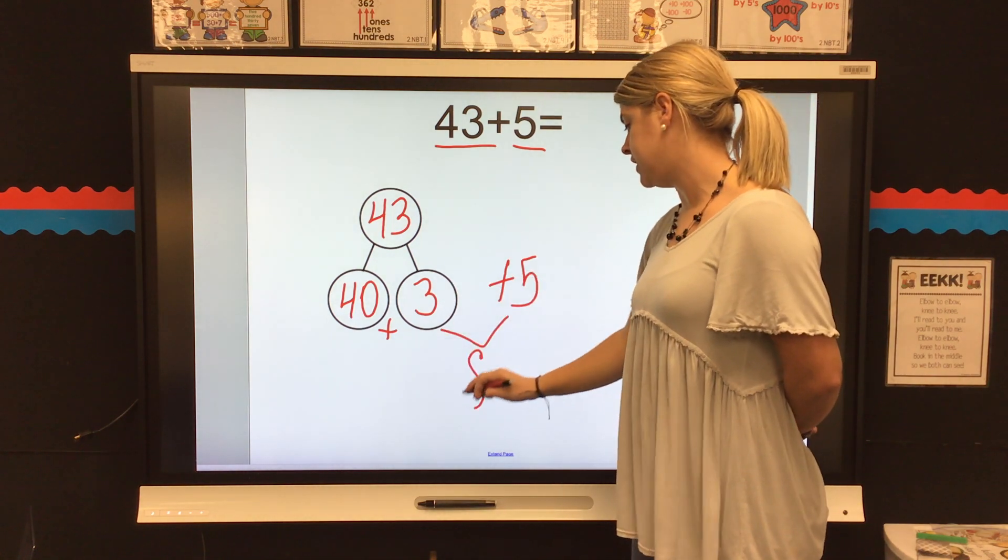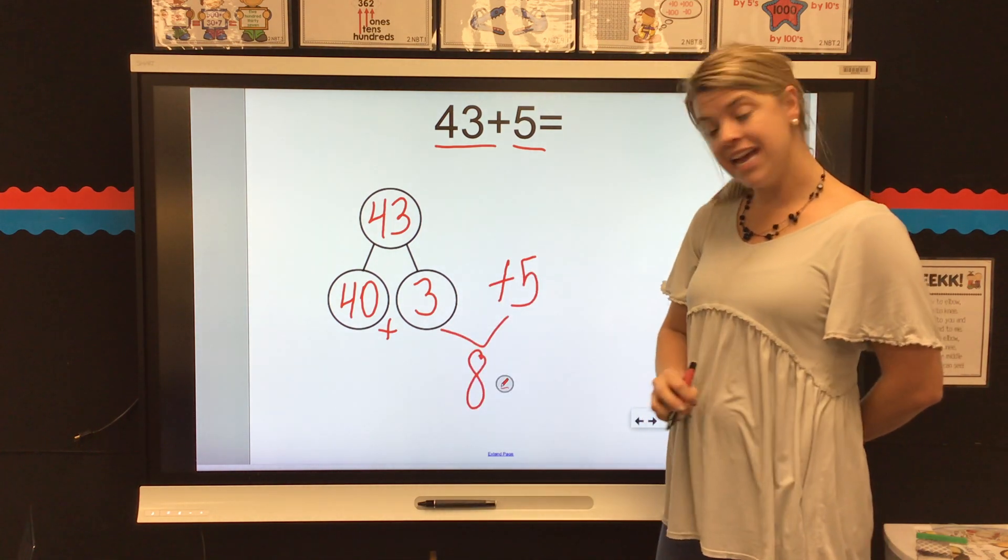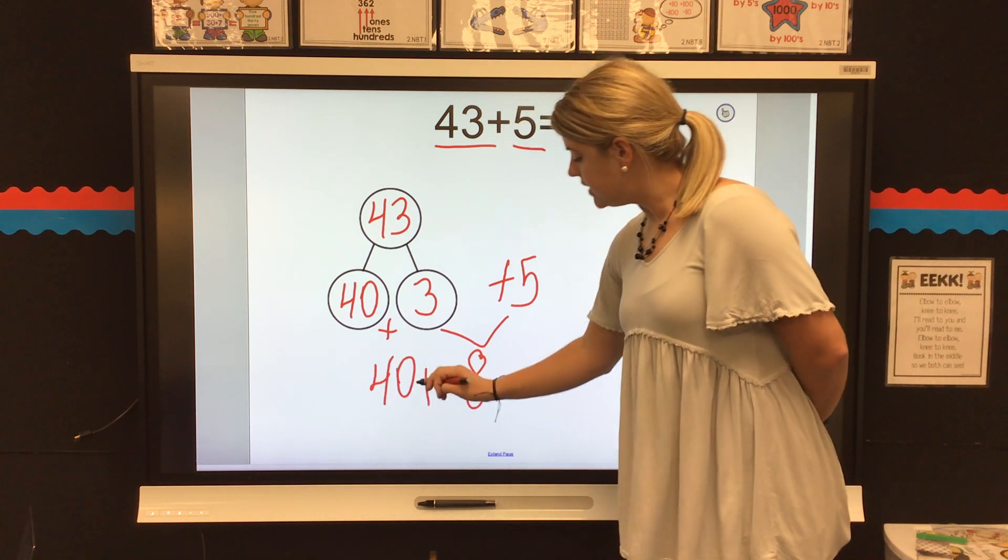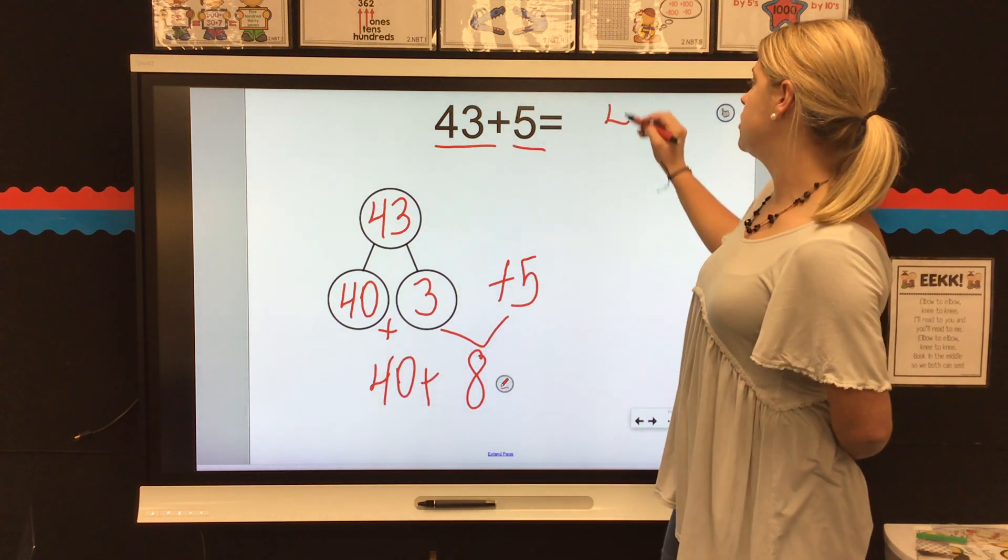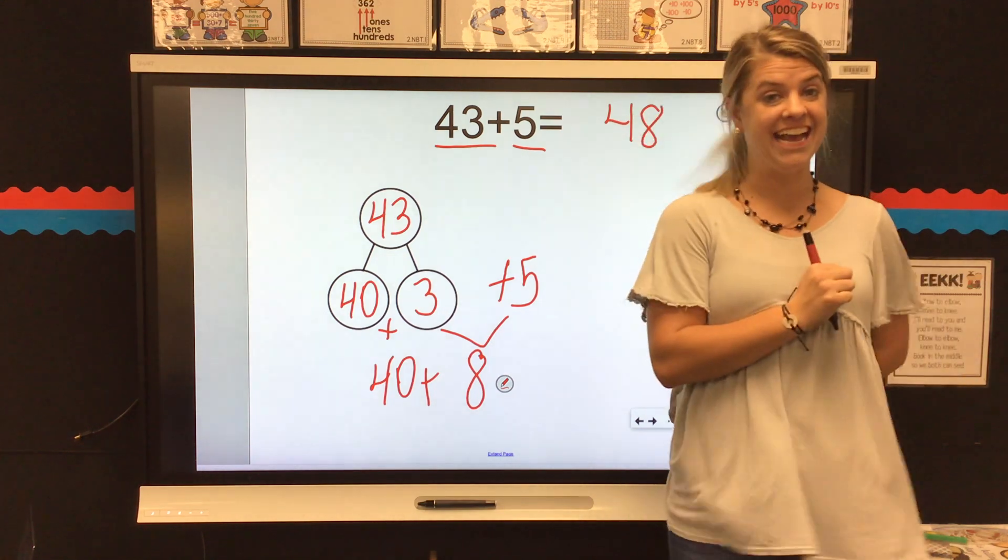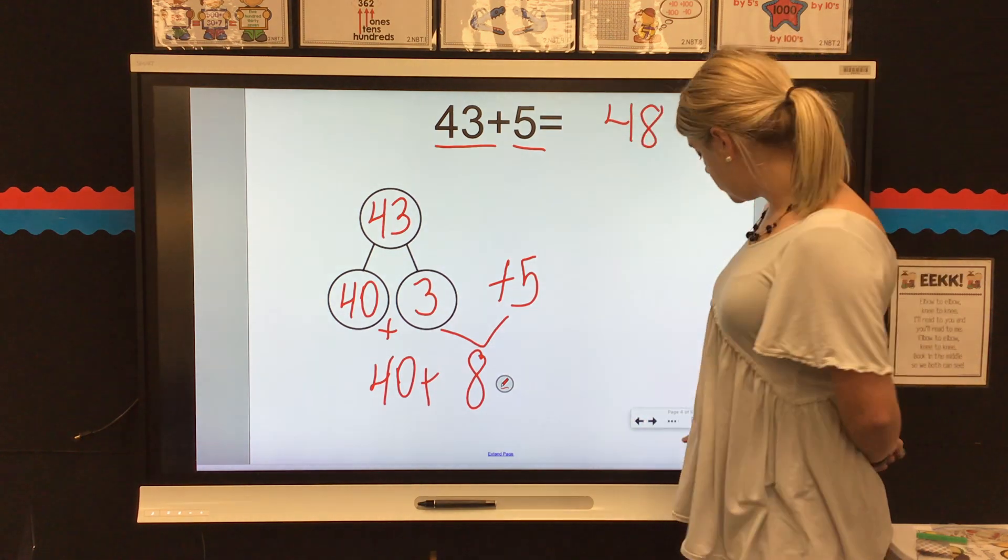Three plus five gives me eight. And now I have 40 plus 8, which equals 48. All right, let's try another one.